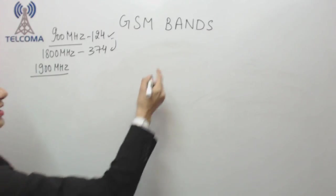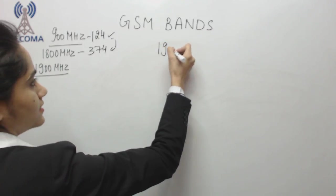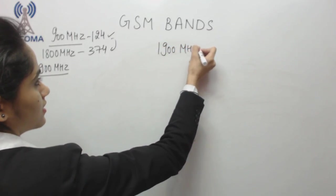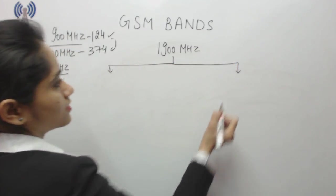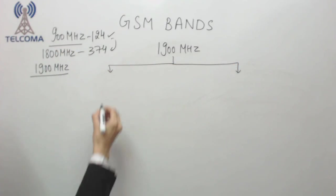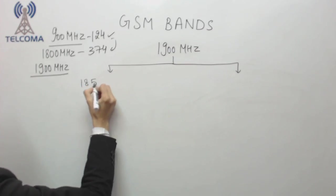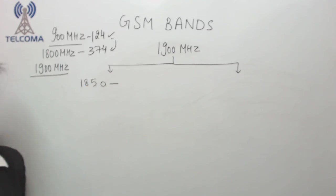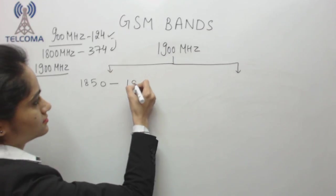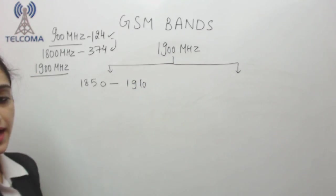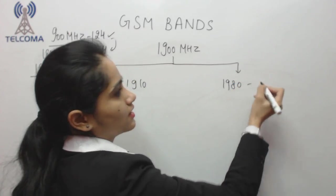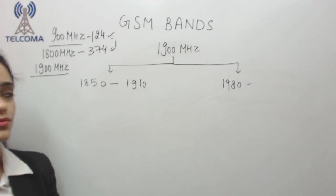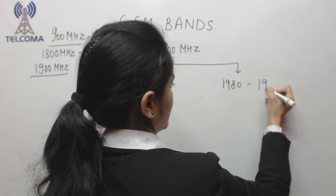Now we have next the 1900 megahertz band. As per its division it is from 1850 to 1910, and then we have 1980 to 1990.